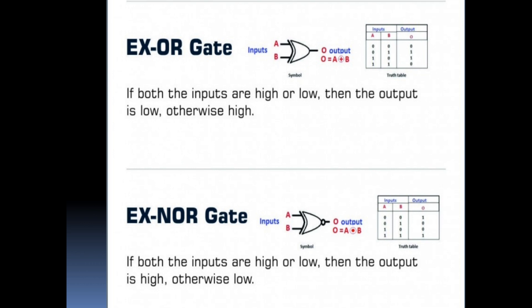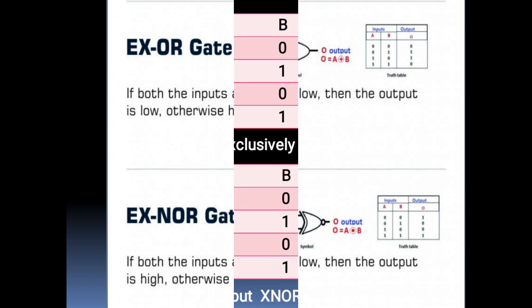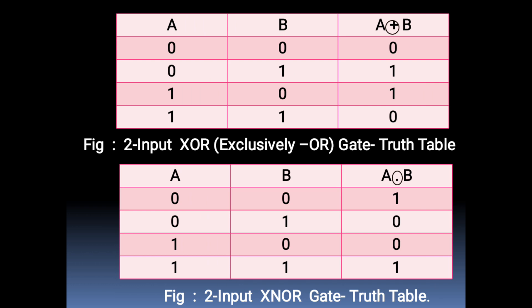The third derived gate is XOR gate. An XOR gate recognizes only those pairs which have an odd number of 1s. If both the inputs are high or low then the output is low, otherwise it is high. The fourth derived gate is XNOR gate. The XNOR gate is the complement of XOR gate — it recognizes those pairs which have an even number of 1s. If both the inputs are high or low then the output is high, otherwise it is low. In XOR gate when the input values are different the output is 1, and in XNOR gate when the input values are similar the output is 1.